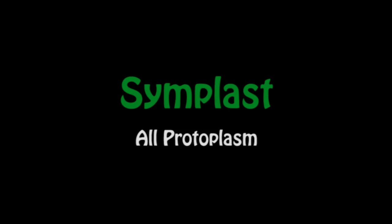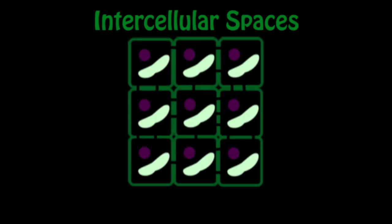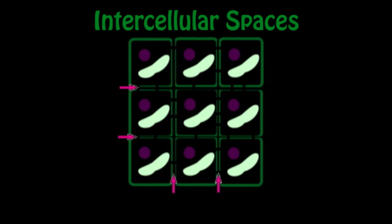In many parts of the plant, there are spaces in between the cells called intercellular spaces. The intercellular spaces allow gases like oxygen and carbon dioxide to diffuse through rapidly.